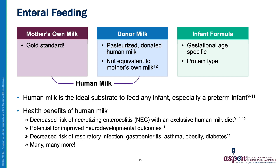For enteral feeding substrates, there are a few options. The first choice will always be mother's own milk — this is the gold standard for feeding any infant, especially a preterm infant. Donor milk is another option when mother's own milk is of insufficient volume or not available. Donor milk is pasteurized, donated human milk. It's important to note that while it can be a good option, it is not equivalent to mother's own breast milk.